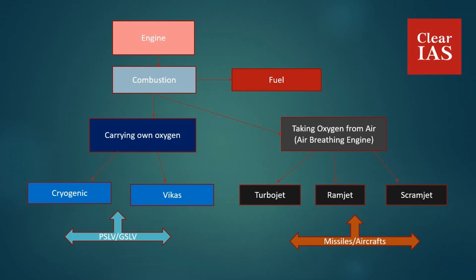As a result of this combustion, some gases come out of the engine at high speed. Because of these gases coming out at high speed, the engine, aircraft, or missile gets thrust and goes up towards the sky. So the basic working principle is: combustion happens in the engine, gases come out at high speed, thrust is generated, and the aircraft or missile goes upward.